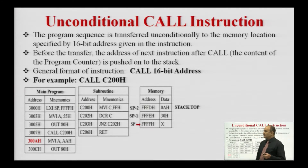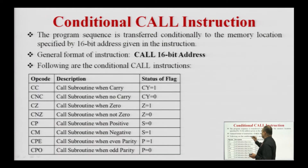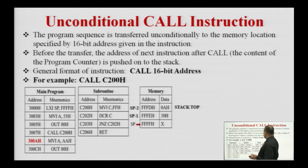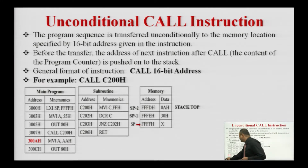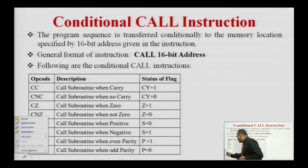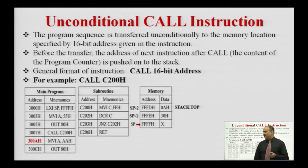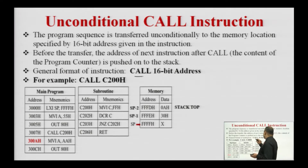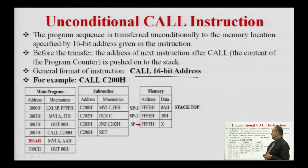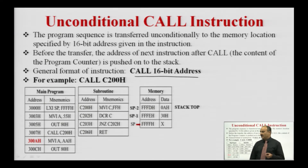During the execution of this subroutine, the program sequence is transferred to the new memory location from the current memory location unconditionally. The processor will transfer the control from the current memory location to the new memory location specified with the CALL instruction. The example of the CALL instruction is: CALL followed by a 16-bit address. Whenever the microprocessor executes this subroutine, it will transfer the control from the main program to the address specified by the instruction.